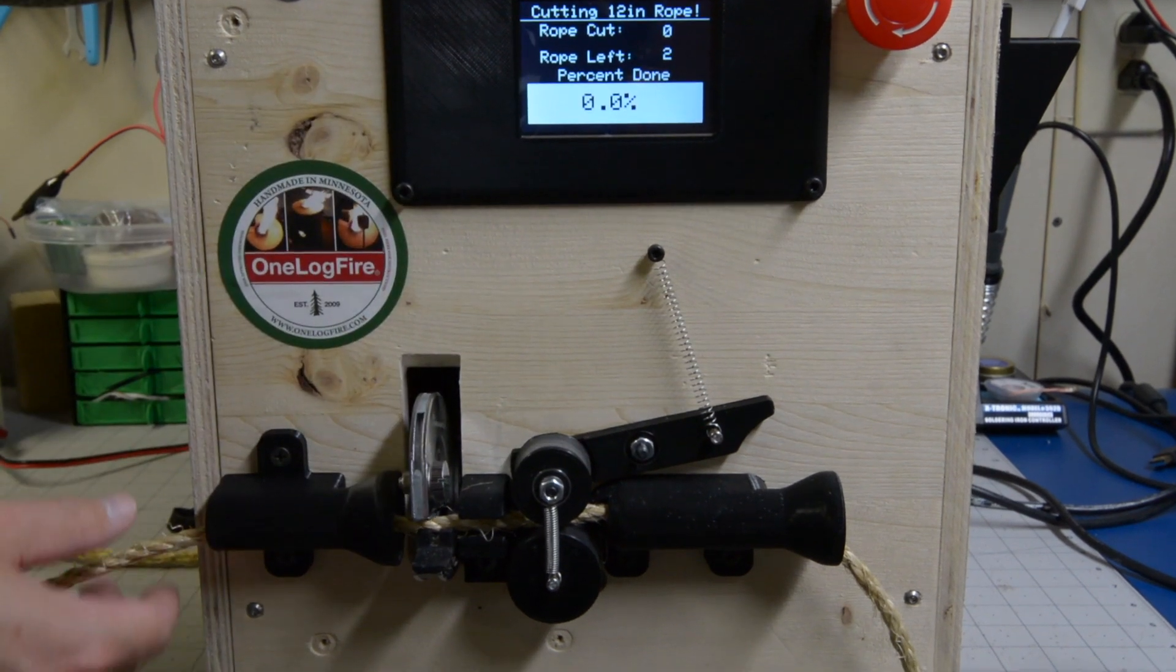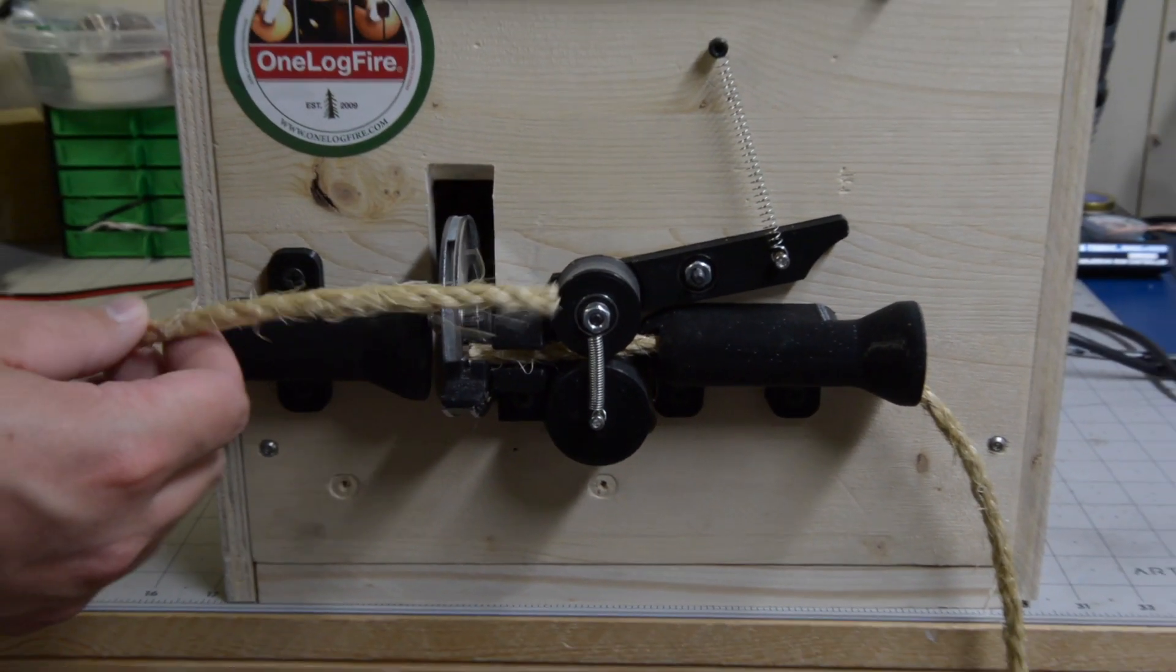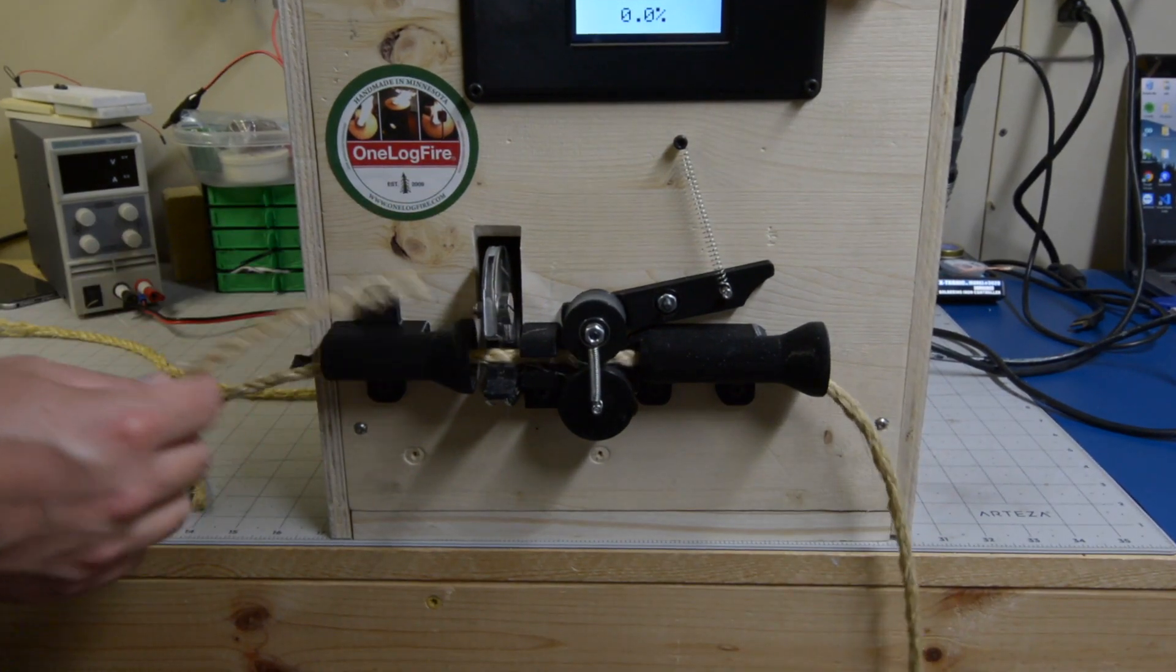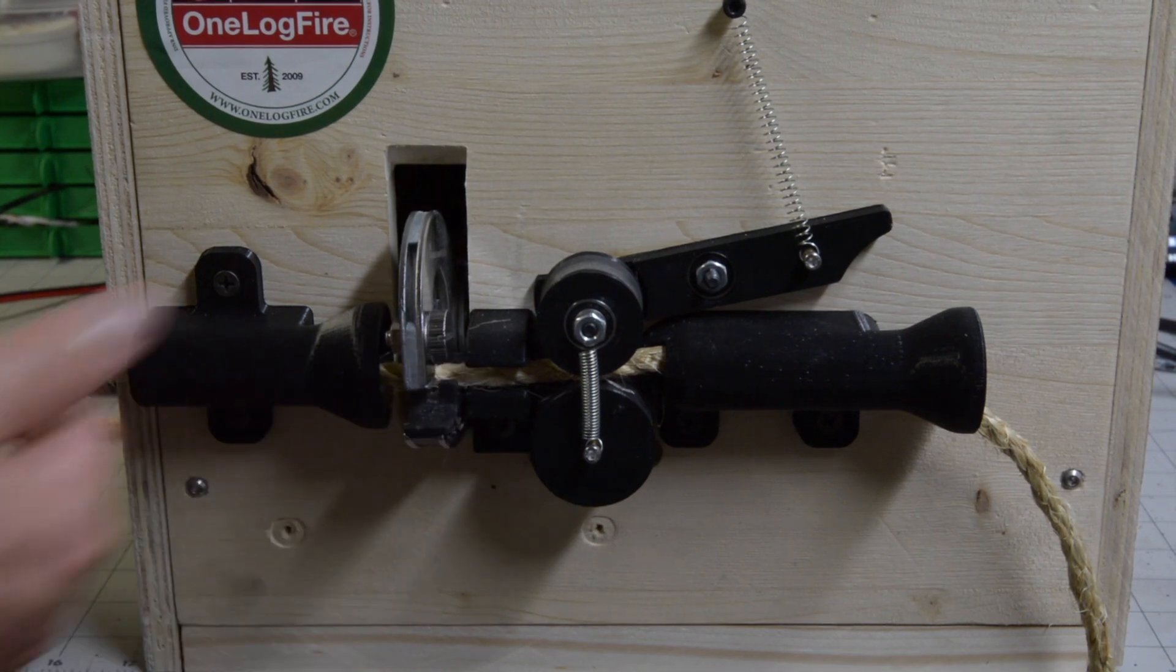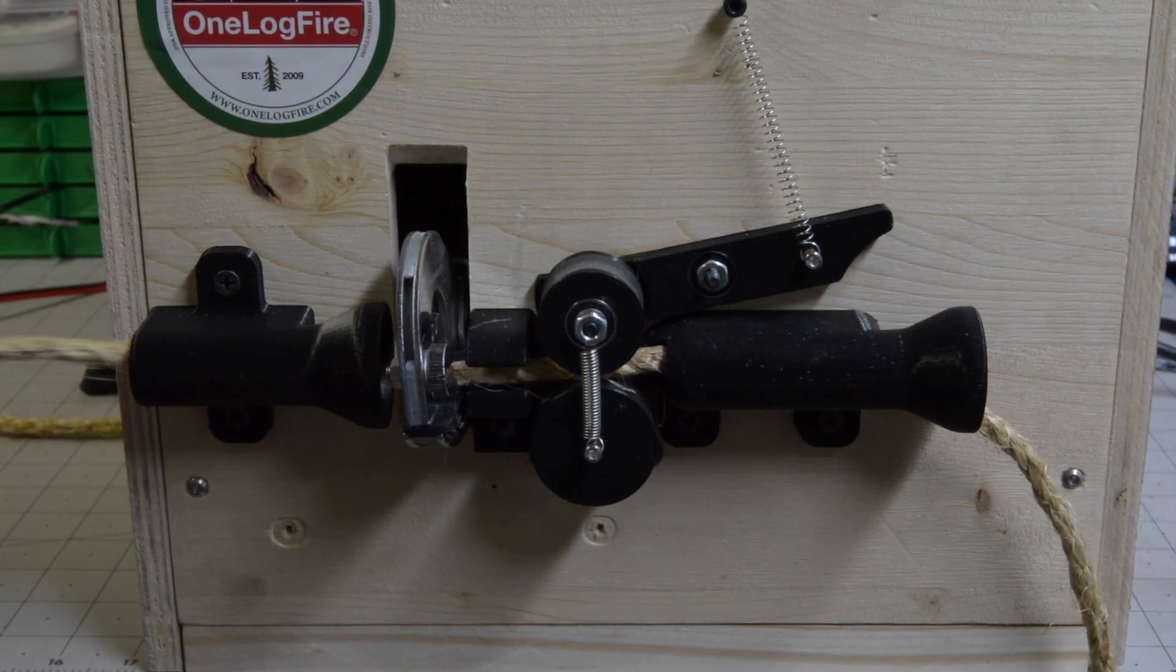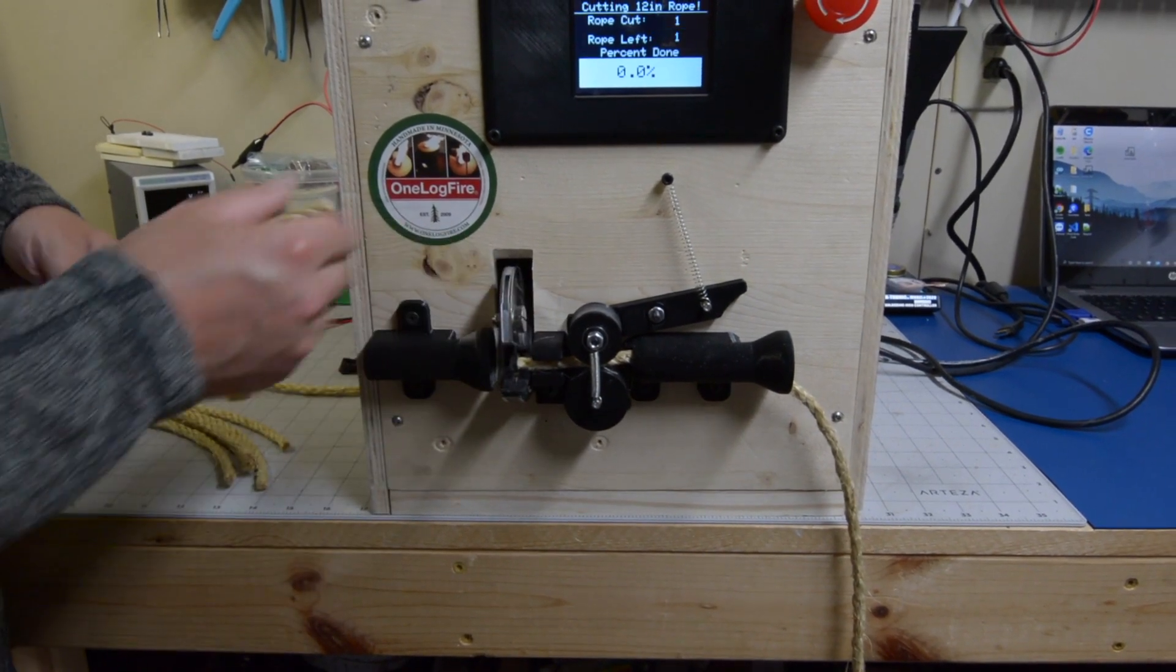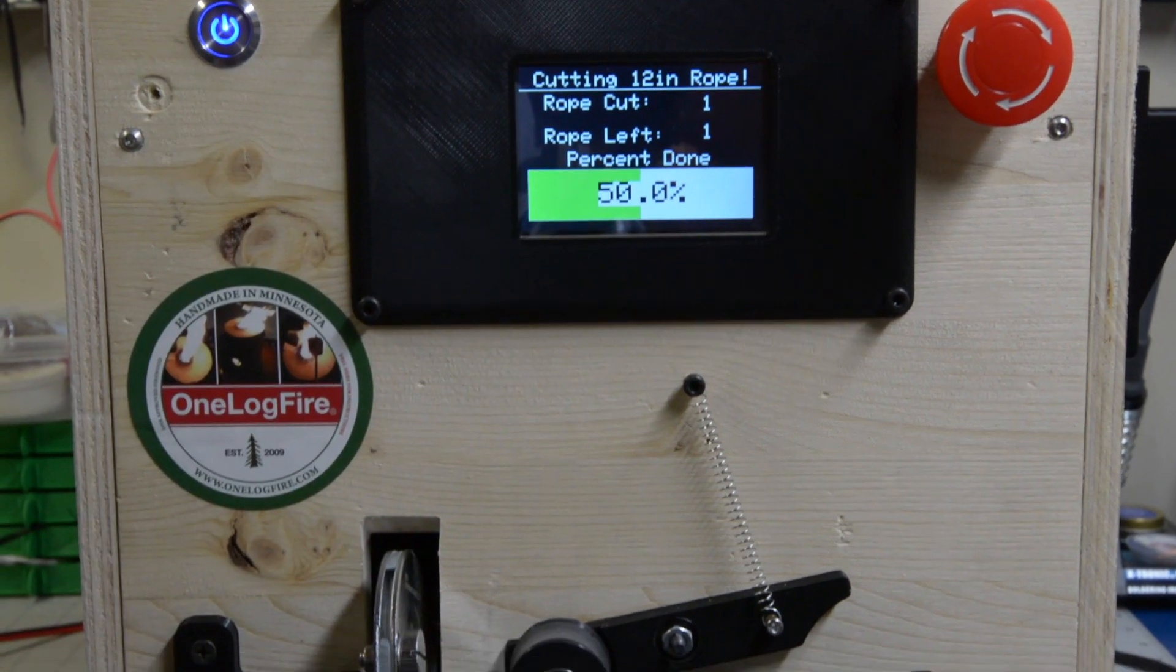So now this will confirm you want to cut 12 inch rope and two of them to cut. Right away you can see our linear actuator cutting. This is because right off the bat the rope is not in the correct length or position. So this will cut and make sure the rope is in the right spot. It will then spin 12 inches. Actuator will come down and you can see our 12 inch piece of rope cut here. On the display you can see we cut one. We have one left to cut and we're 50% done.